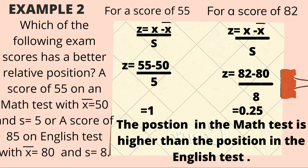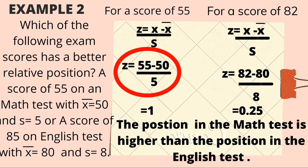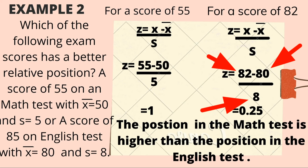Let's proceed to example number 2. Which of the following exam scores has a better relative position? A score of 55 on a math test with a mean of 50 and standard deviation of 5, or a score of 85 on an English test with a mean of 80 and standard deviation of 8. Using the sample data formula: for math, 55 minus 50 divided by 5 equals 1. For English, 85 minus 80 divided by 8 equals 0.25. So the position in the math test is higher than the position in the English test.